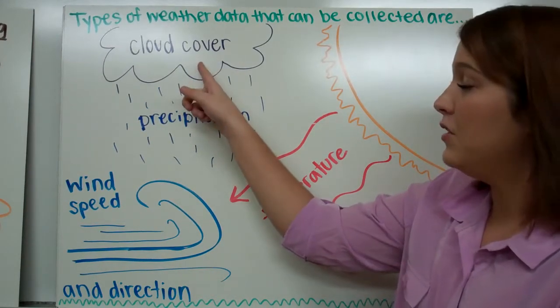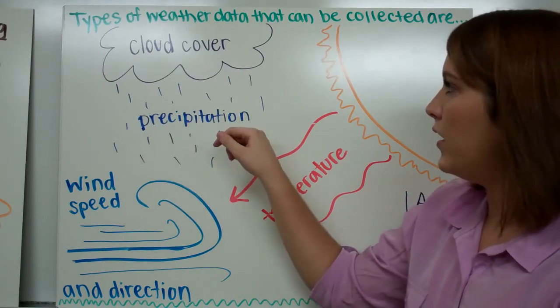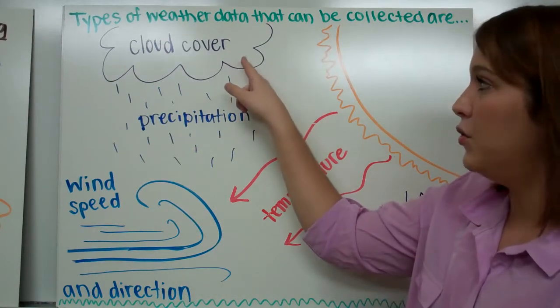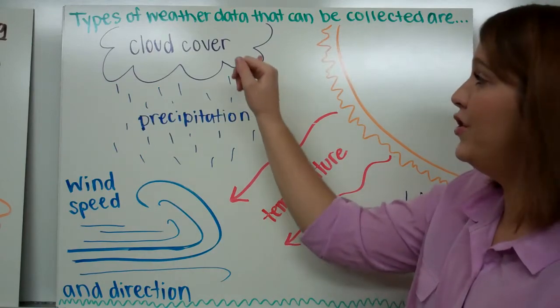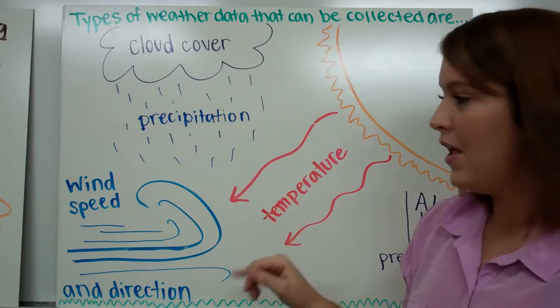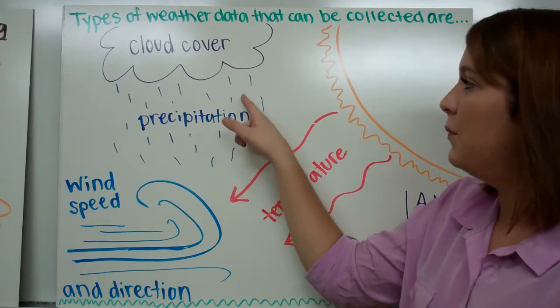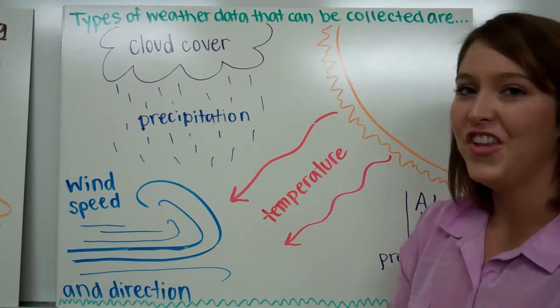Precipitation, which is directly related to cloud cover, is another thing that we consider. Precipitation has to have a cloud to occur, but clouds do not always produce precipitation. We can collect information about precipitation depending on the clouds that are in the sky.